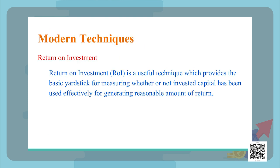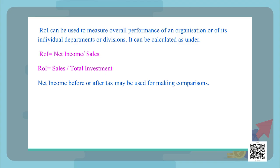Now let us discuss modern techniques. The first modern technique is return on investment (ROI). It is a useful technique which provides the basic yardstick for measuring whether or not invested capital has been used efficiently for generating a reasonable amount of return. ROI can be useful for calculating performance of individual departments or the organization as a whole. The formula is: net income divided by sales, or sales divided by total investment.